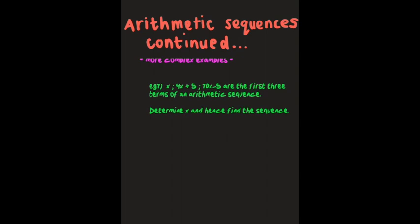So example 1: X, 4X plus 5, 10X minus 5 are the first three terms of an arithmetic sequence. Our question is determine X and hence find the sequence. So we're going to find out what is the numerical value for X because then I can actually figure out what exactly is the value of those first three numbers in the first three positions of the pattern.